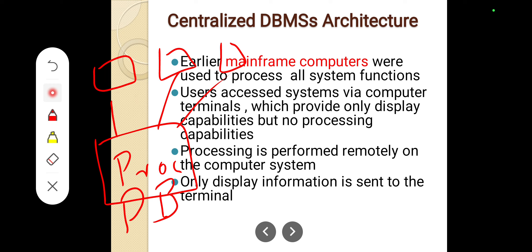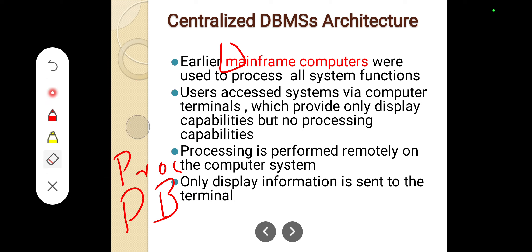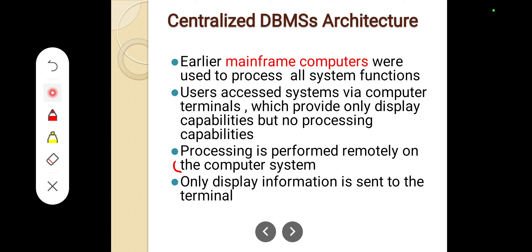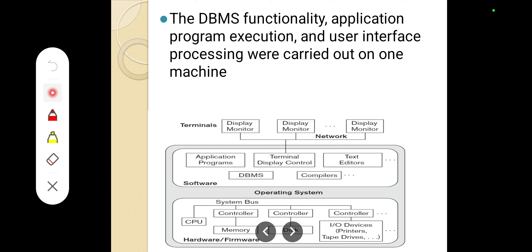In the centralized DBMS architecture, earlier mainframe computers were used to process all the system functions. Users access the systems through computer terminals which provide only the display capability but no processing capabilities. There is no processing capability at the terminal. The processing is performed remotely on the central computer system. Only the display information is sent to the terminal.